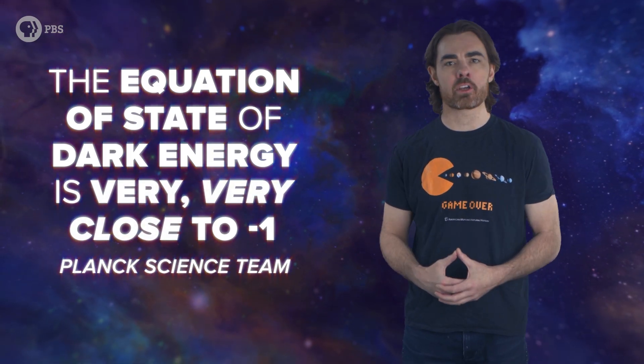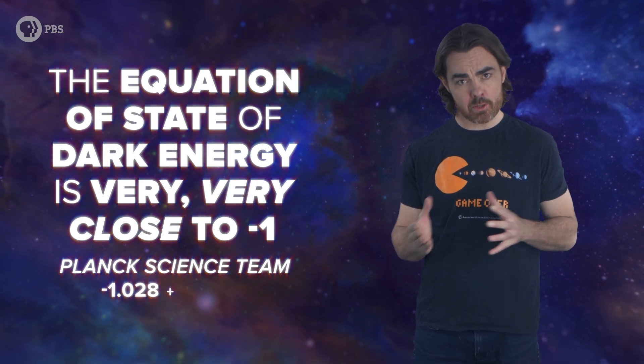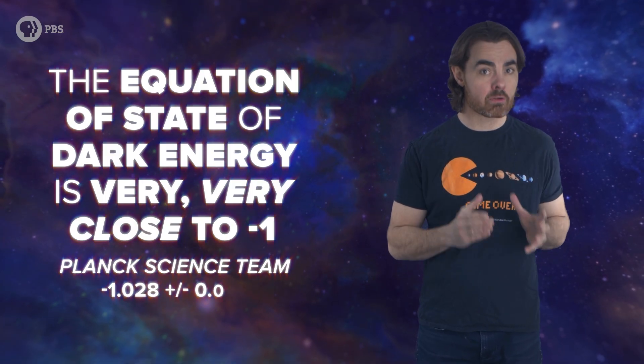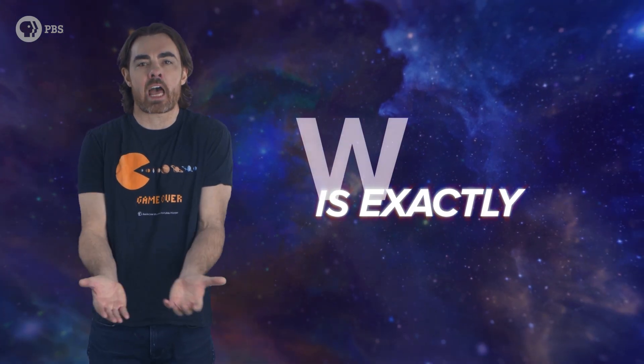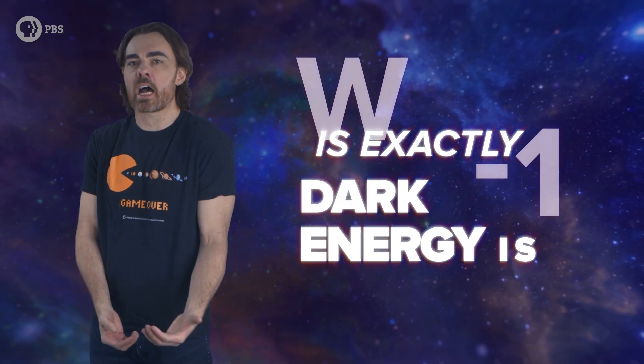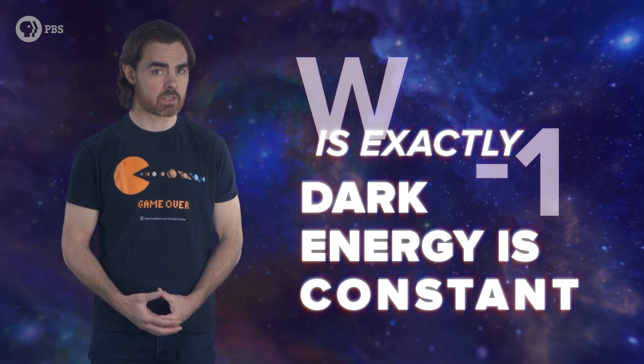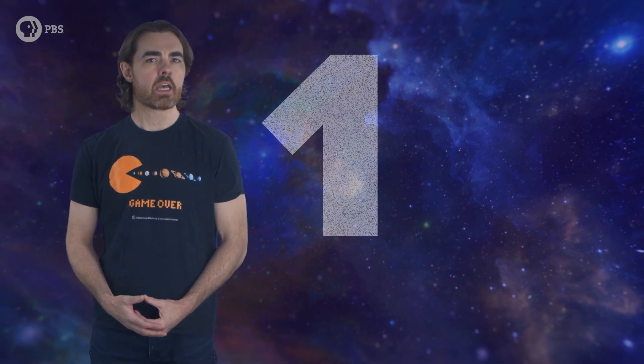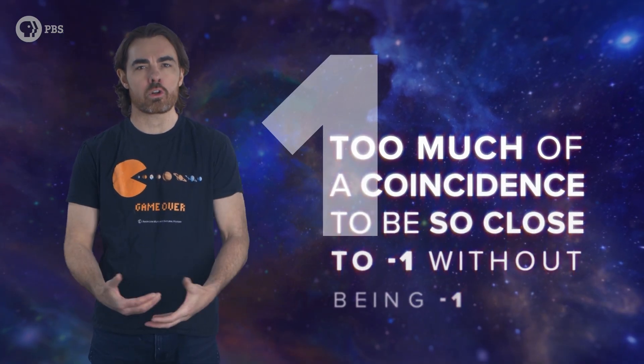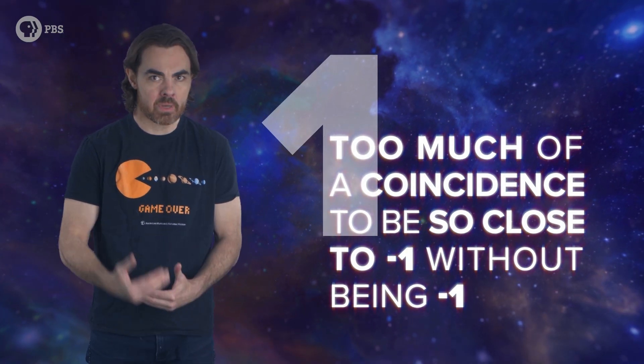The Planck science team calculate negative 1.028 plus or minus 0.032. Phantom energy is still a faint possibility, but even at its most extreme from the Planck estimate, the big rip would be around 75 billion years away. Time to get our affairs in order. But more likely is that w is exactly negative 1, meaning dark energy is constant for three reasons. First, it seems too much of a coincidence that it should be so close to negative 1 without being negative 1.